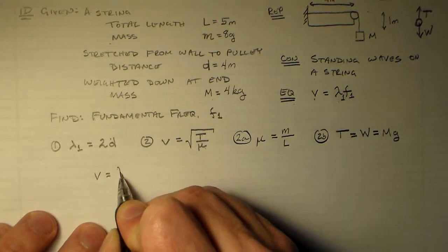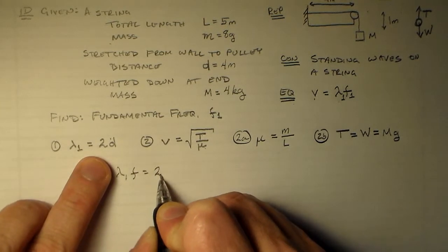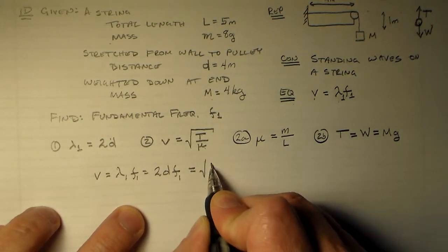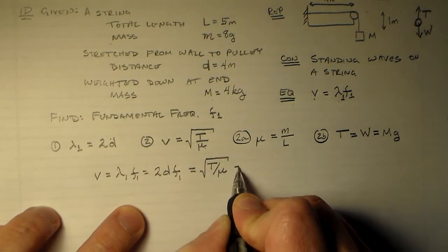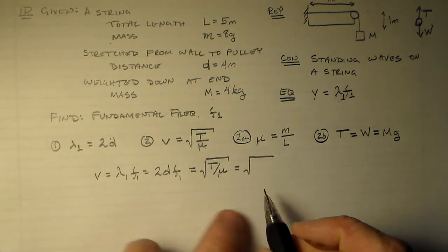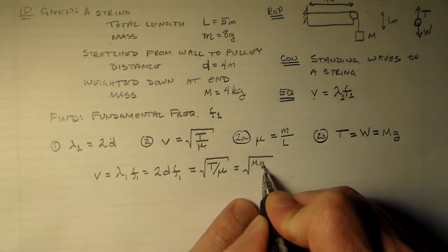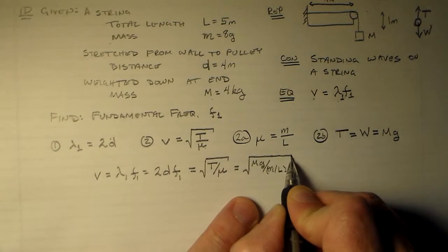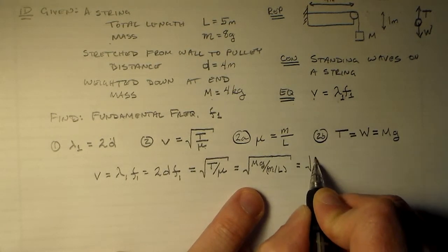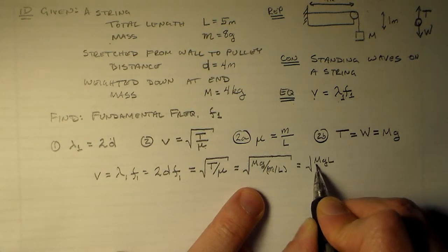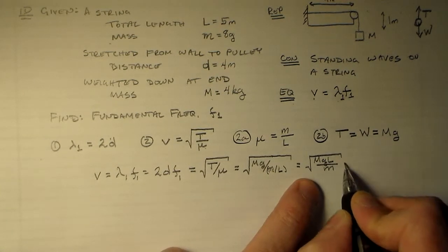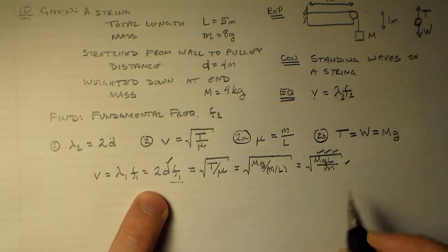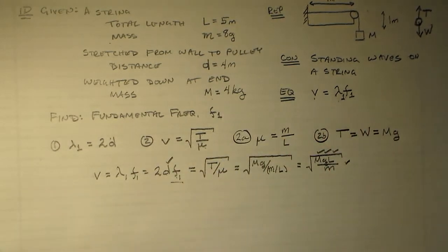So, let's put it all together. V is equal to lambda 1 times F1, which is equal to 2DF1. And that's also equal to the square root of T over mu, which is equal to the square root of M times G over little m divided by L. We have MGL divided by little m is our last thing. So, we've got this is equal to this, and that will let us find this. Because we know this guy, this guy, we know that guy, we know that guy, we know that guy. We know everything here, except for this F1, which is the thing that we want to find.